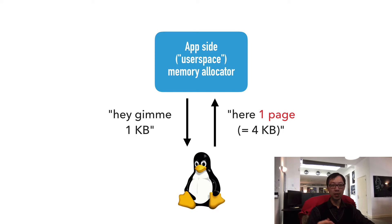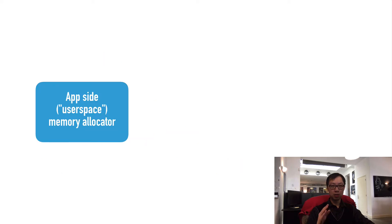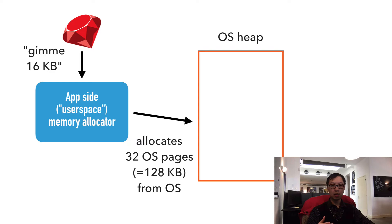The OS can only allocate memory in units of entire OS pages, and the reason for this is complicated, so I won't go into details — suffice to say it's fundamental to all modern kernels. The user space memory allocator can allocate memory pieces of any size. Asking the kernel to allocate memory is a very expensive operation, so the memory allocator allocates large pieces of memory from the OS and divides those into smaller ones. An application asks the memory allocator to allocate something; the memory allocator asks the kernel to allocate something usually much bigger. What is allocated from the kernel is called a heap — again, nothing to do with Ruby heap pages. For clarity, I will use the term OS heap.